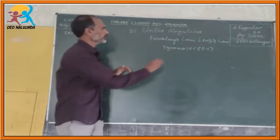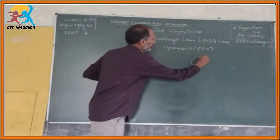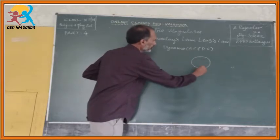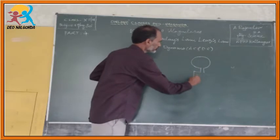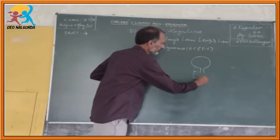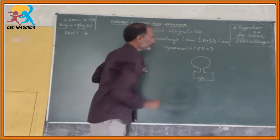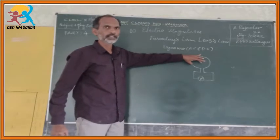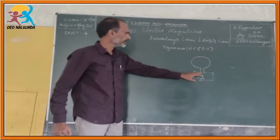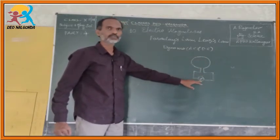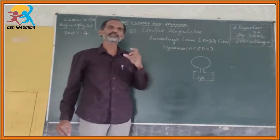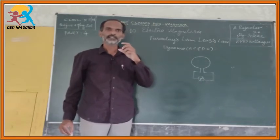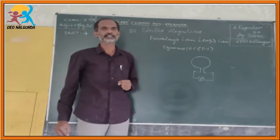He took one electric coil and connected it to a galvanometer. The difference between the galvanometer and ammeter is that a galvanometer can detect the smallest quantities of electrical current as well.